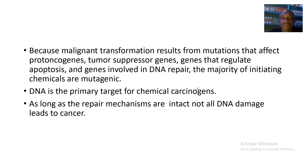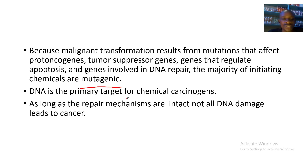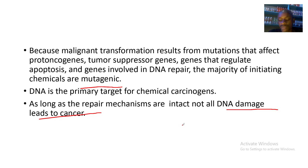Malignant transformation results from mutations that affect proto-oncogenes, tumor suppressor genes, genes that regulate apoptosis, and genes involved in DNA repair. The majority of initiating chemicals are mutagenic, so DNA is a primary target for chemical carcinogens. As long as the repair mechanisms are intact, not all DNA damage leads to cancer.